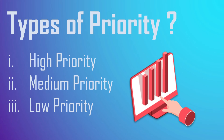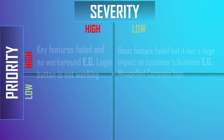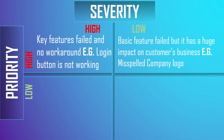Low priority issues have no impact on the customer's business. Now let's see how we can differentiate high severity/high priority, low severity/low priority, high severity/low priority, and low severity/high priority bugs. High severity and high priority: a key function has failed and there is no workaround. Example — the login button doesn't work so the user cannot access the system.